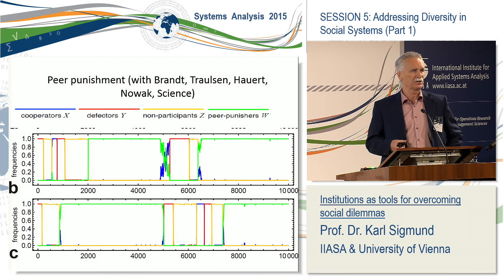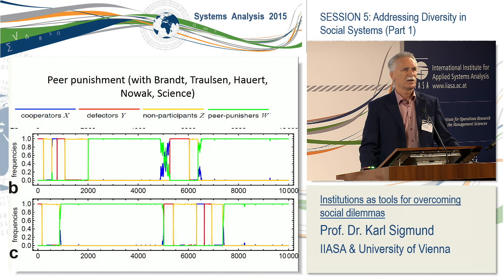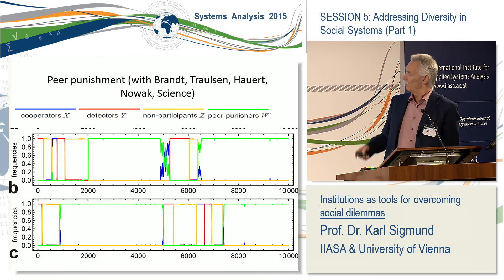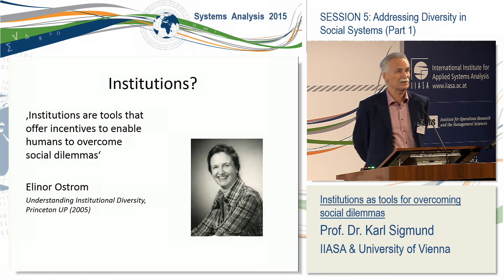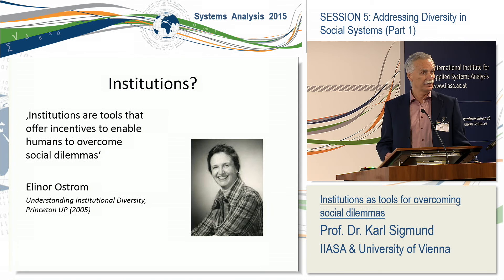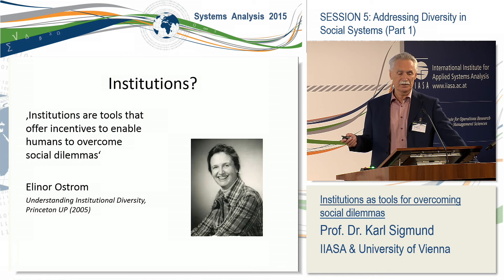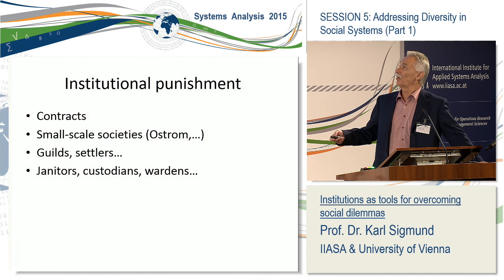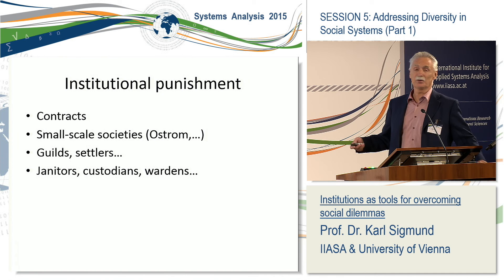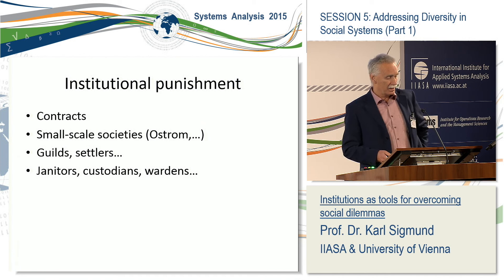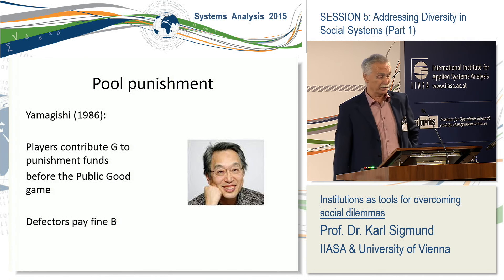There is an instability in this peer punishment situation, and in fact we don't see a lot of peer punishment in our civilizations. Punishment is usually assumed to be made by institutions. This is of course a great topic of Eleanor Ostrom, who said that institutions are tools that offer incentives to enable humans to overcome social dilemmas. In every developed society there is a lot of institutional punishment, provided by contracts, and in small-scale societies by strong men or sheriffs — histories of guilds or settlers who had their own sheriff. There is a bottom-up approach to institutions which can deliver punishment, and this can also be modeled in a very simple way in games.